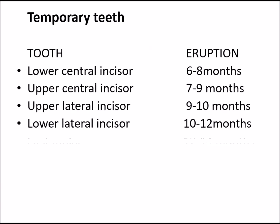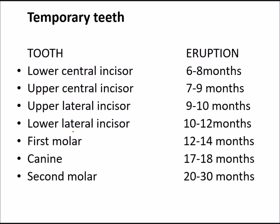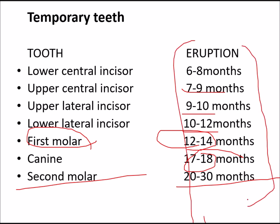The age of eruption for temporary teeth: lower central incisor at 6–8 months, upper central incisor at 7–9 months, upper lateral incisor at 9–10 months, lower lateral incisor at 10–12 months, first molar at 12–14 months, canine at 17–18 months, and second molar at 20–30 months.